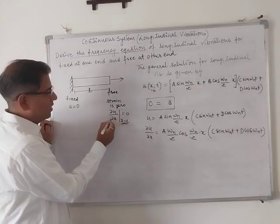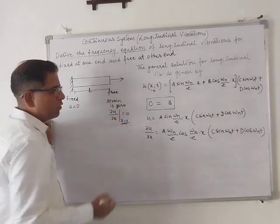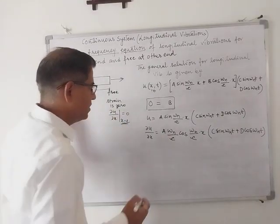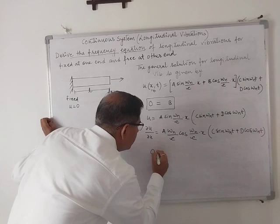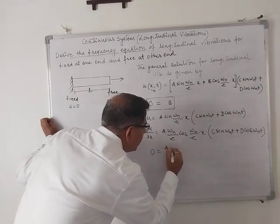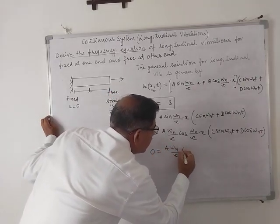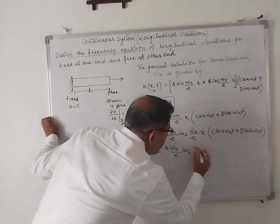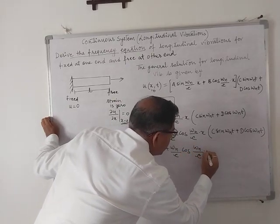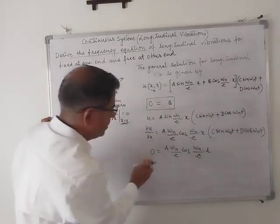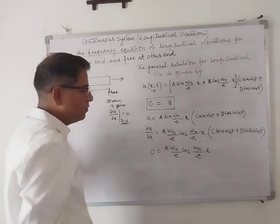Now we put del u by del x as zero when x equals l. So this is zero equals A * omega_n/c * cos(omega_n/c * l), and this term becomes zero.